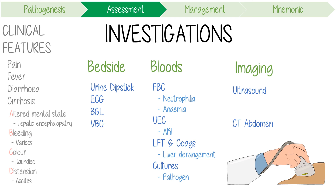Imaging might include an ultrasound and a CT abdomen. The ultrasound is the definitive test for the detection of ascites. Sonography can help determine the adequacy of fluid for paracentesis and can help you localise the procedure too. A CT abdomen should only really be considered if you have findings suggestive of secondary peritonitis, which is caused by a surgically treatable intra-abdominal source.